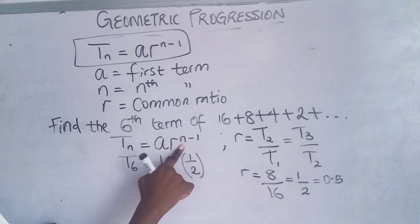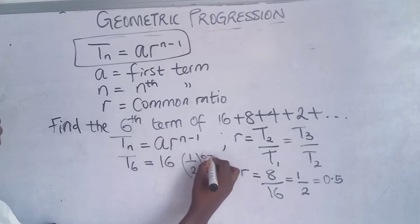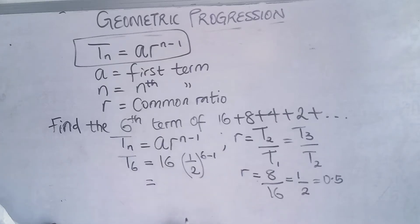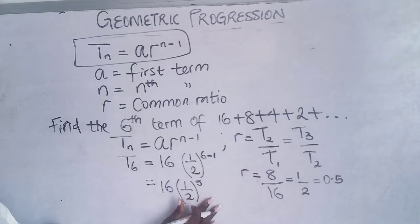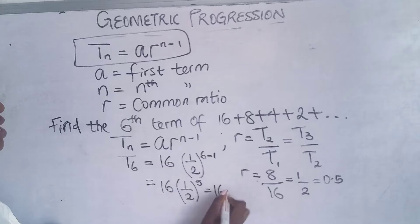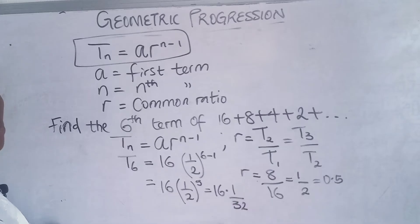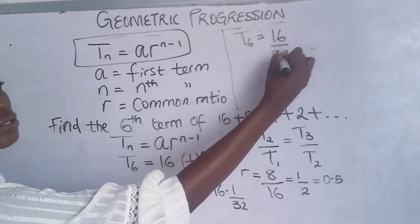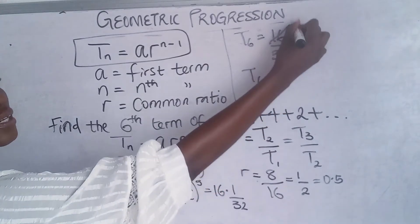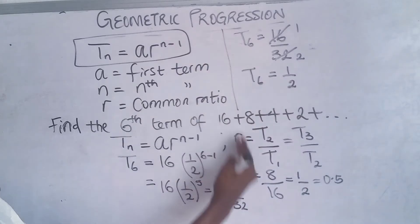'n' is 6 because we are asked to find the sixth term, so the exponent is n−1 = 6−1 = 5. We have T6 = 16 × (1/2)^5. Make sure you work out what is in the brackets first. (1/2)^5 = 1/32. So we have 16 × (1/32) = 16/32.